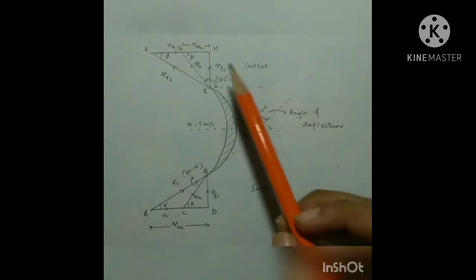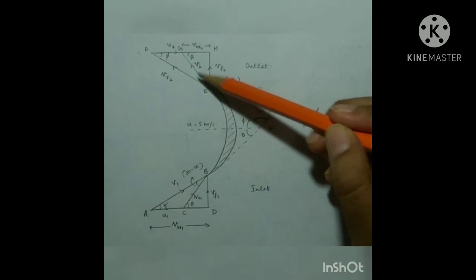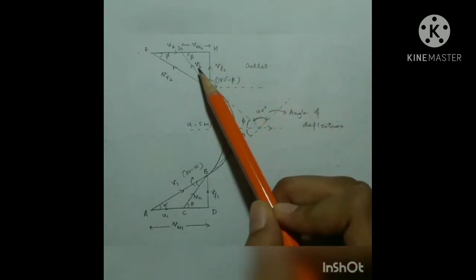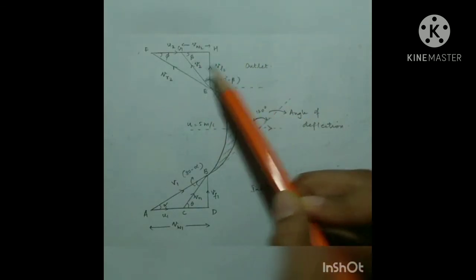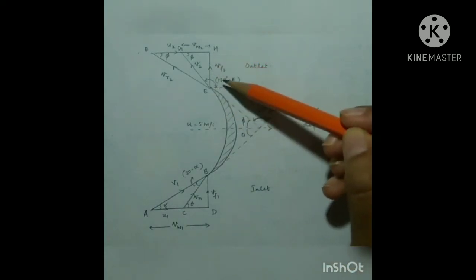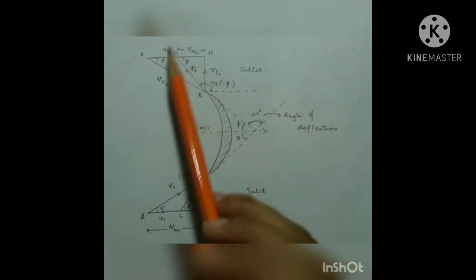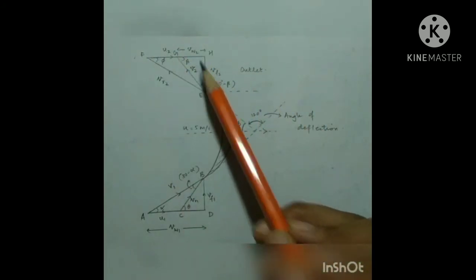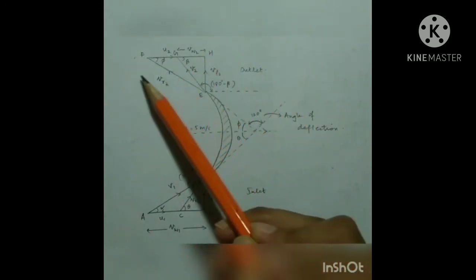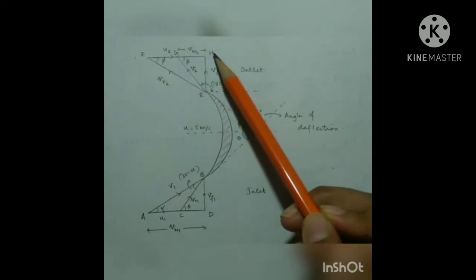Similarly, at the outlet, we have V2 which is the velocity of the jet, and Vr2 which is the relative velocity. V2 also has horizontal and vertical components: Vw2 is the horizontal component and Vf2 is the vertical component. U2 is the velocity of the curved vane. Phi is the angle between the relative velocity and the horizontal, and beta is the angle between the velocity and the horizontal.